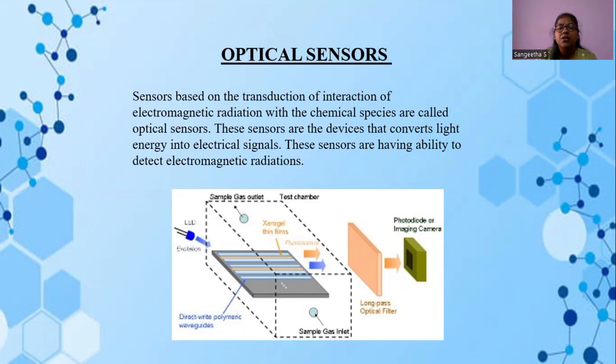Optical sensors. Sensors based on the transduction of interaction of electromagnetic radiation with chemical species are called optical sensors. These sensors are devices that convert light energy to electrical signals. These sensors have the ability to detect electromagnetic radiation.